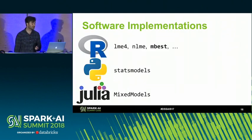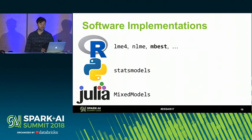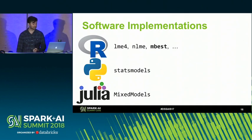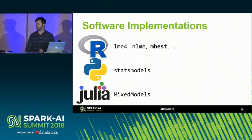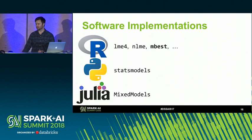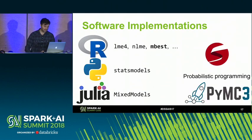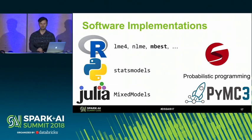There are a variety of software implementations for hierarchical models. Probably the most common in academia is the R package LME4. There are also implementations in Python and Julia. The R package MBEST is relevant for us today because it implements some of the moment-based estimation techniques I'll be discussing — we've copied these techniques into our Spark implementation. If you aren't working on big data, the R implementation is probably good enough, but for industrial-scale data, R is going to falter. You can also fit hierarchical models in just about any probabilistic programming language.